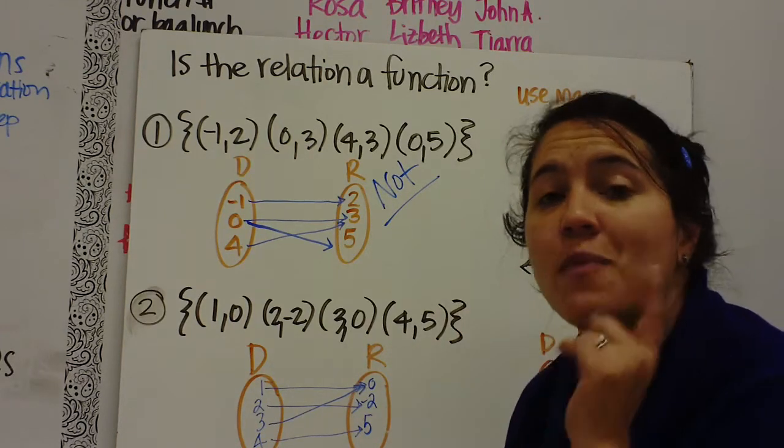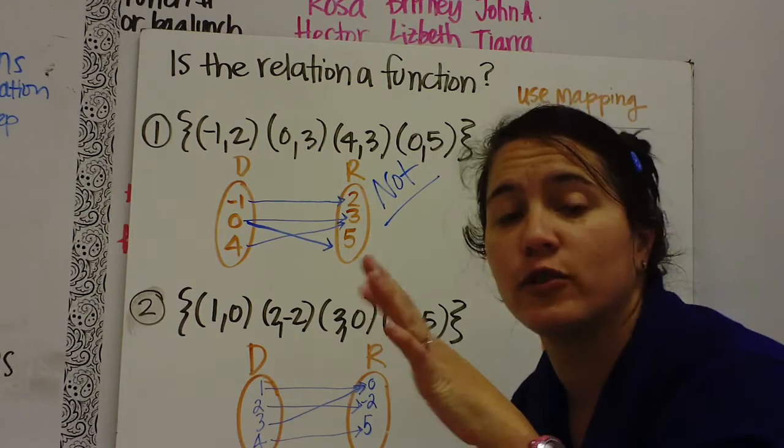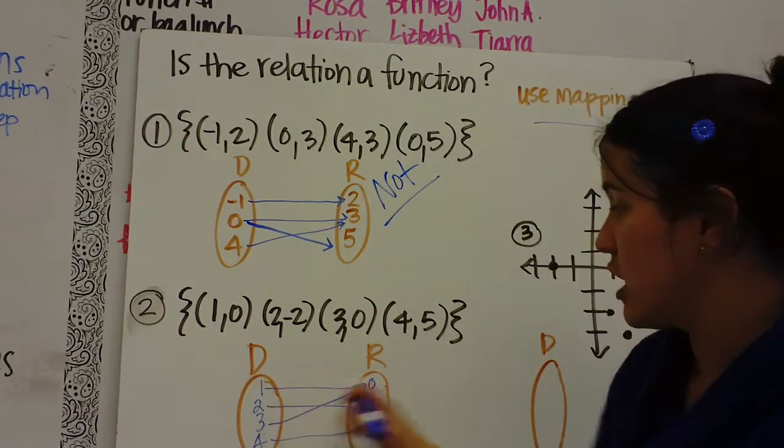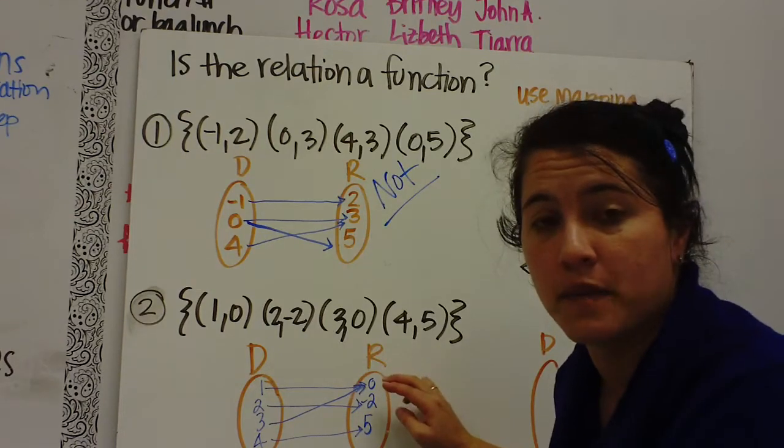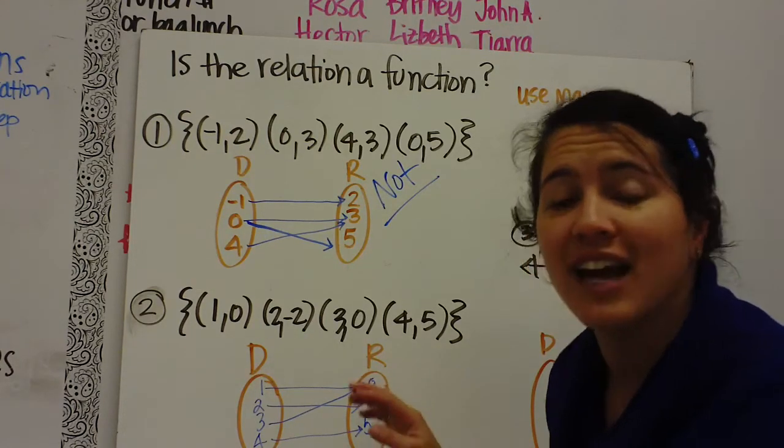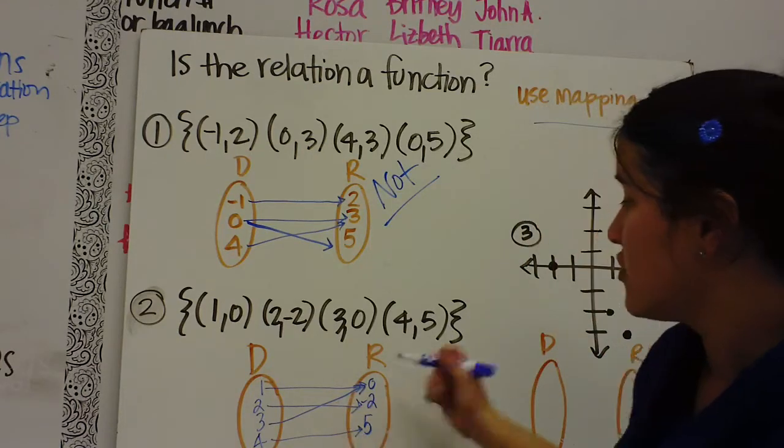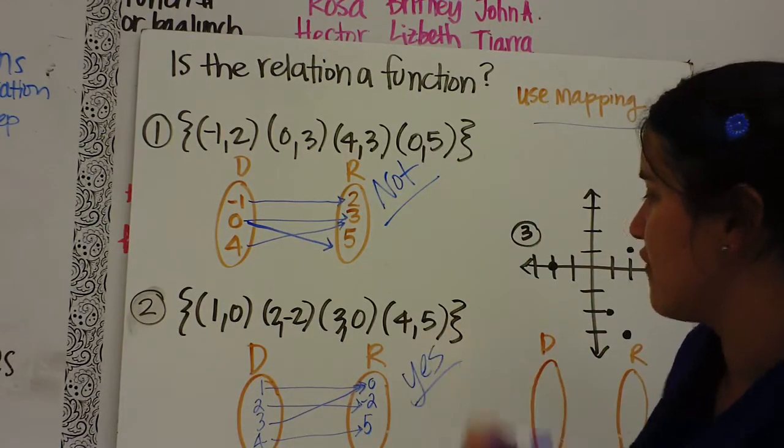Is there any one domain value that goes to two different ranges? So we look and now there's two numbers going to zero. But that's okay. You can't have two arrows coming from a domain. So this answer would be yes, this is a function.